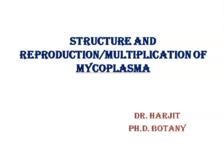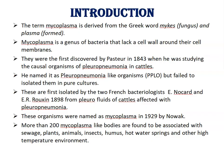Our today's topic is structure and reproduction of mycoplasma. The term mycoplasma is derived from the Greek word 'mys' meaning fungus and 'plasma' meaning form. Mycoplasma is a genus of bacteria that lack a cell wall around their cell membranes. Mycoplasmas were first discovered by Pasteur in 1843 when he was studying the causal organisms of pleuropneumonia in cattle. He named these organisms as pleuropneumonia-like organisms, i.e., PPLO, but Pasteur failed to isolate them in pure culture.